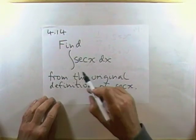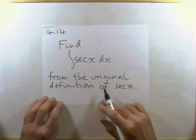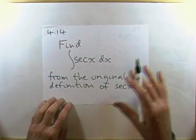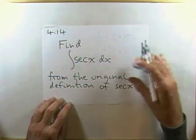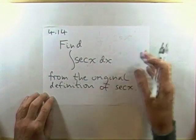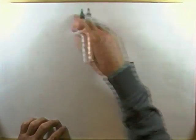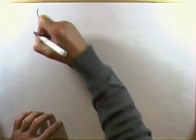Find the integral of sec x dx from the original definition of sec, without any foreknowledge of the expected results, but simply from its original definition as 1 over cos. This is mainly to illustrate the techniques of using substitutions and dealing with trig identities to resolve problems involving trig integrals.